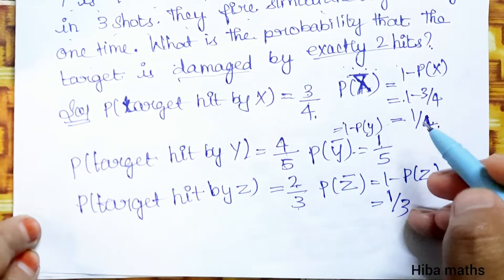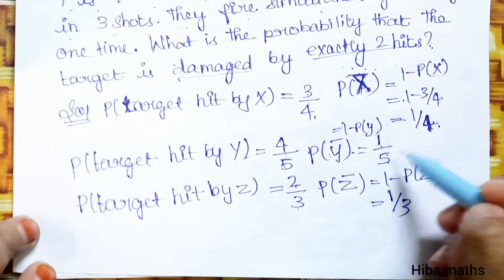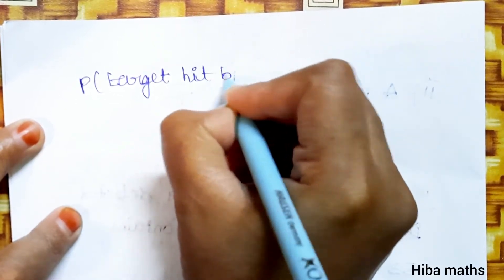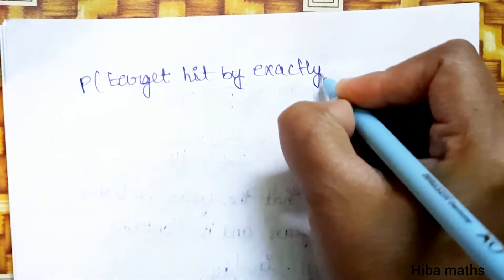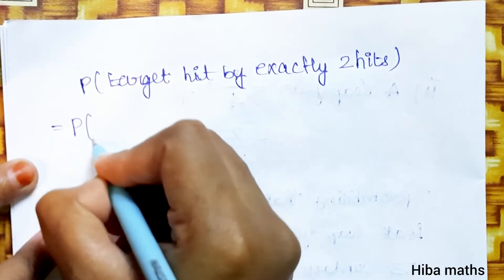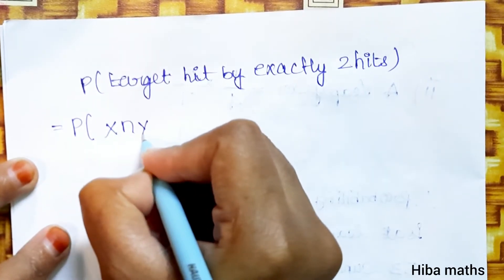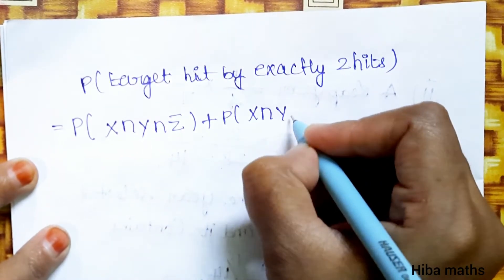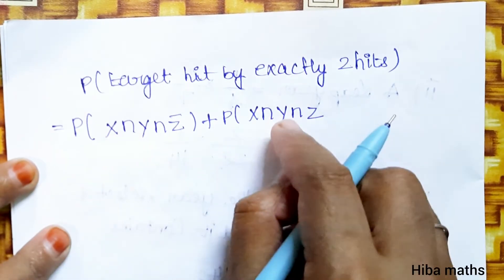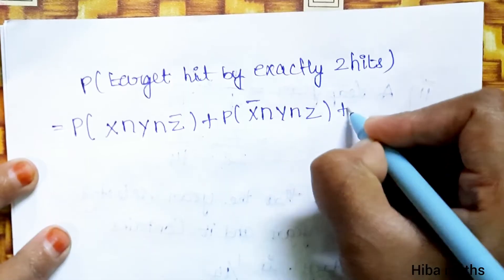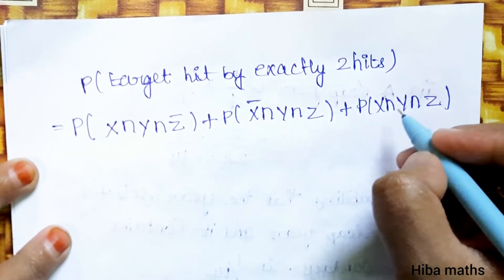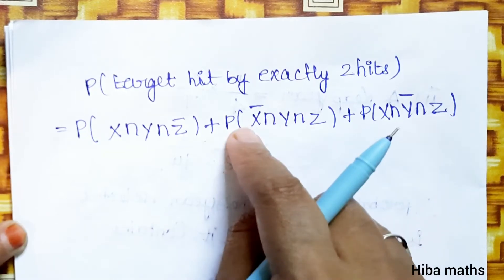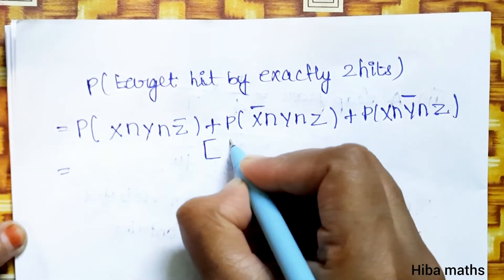For exactly 2 hits, we consider the cases: P(X ∩ Y ∩ Z̄) plus P(X̄ ∩ Y ∩ Z) plus P(X ∩ Ȳ ∩ Z). That is, X and Y hit but Z misses, or Y and Z hit but X misses, or X and Z hit but Y misses.